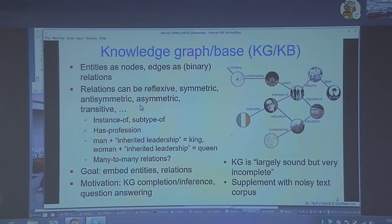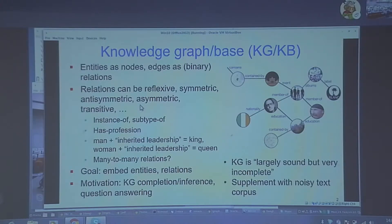This kind of translation-based representation of relations is limited because it cannot address many-to-many relations. If you start from one point and make a fixed translation, you will always go to another fixed point — you cannot go to multiple points. That is a different and fascinating field of study, namely the representation of relations and knowledge graphs in a very generic setting in the continuous domain. Today we will be restricted to talking about the instance-of and subtype-of relations where the clues come from other places in the knowledge graph.